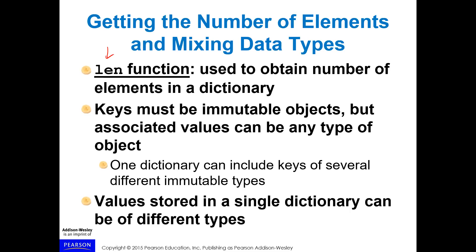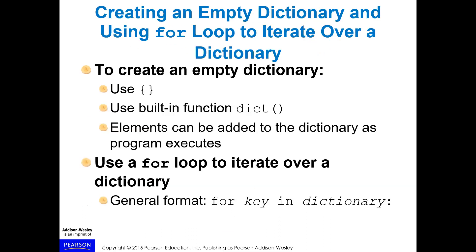Associated values can be any changeable type. One dictionary can include keys of several different immutable types — numbers, letters, etc. Values stored in a single dictionary can also be of different types. You can even have dictionaries of objects themselves, not just strings and integers. To create an empty dictionary, just assign curly brackets: a = {}.